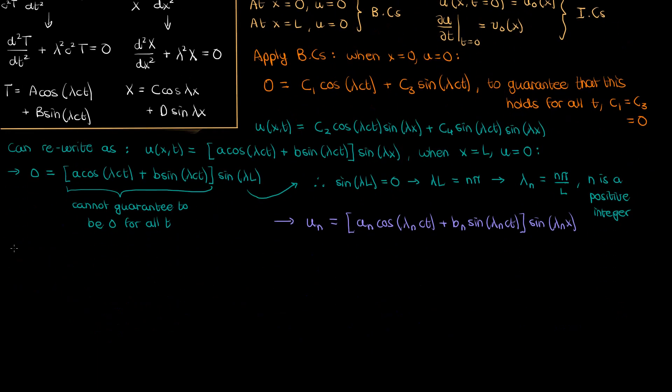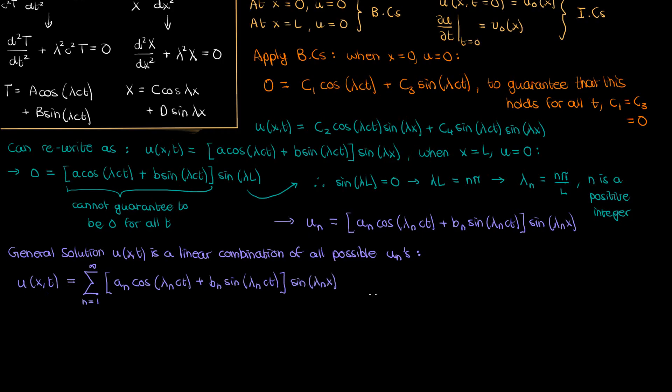Because the PDE and the boundary conditions are all linear and homogeneous what I can do is I can write my general solution as a linear combination of this infinite set of individual solutions. So overall I will find that my u of x comma t is the sum from n equals 1 to infinity of a sub n times the cosine of lambda sub n times c times t plus b sub n times the sine of lambda times c times t all of this multiplying sine of lambda sub n times x where the a n's and b n's are just coefficients.